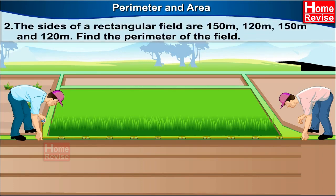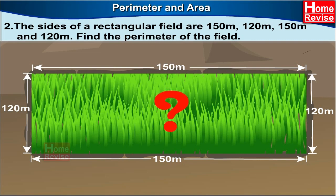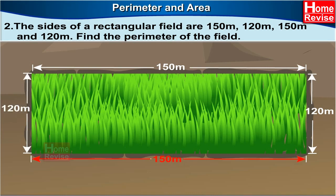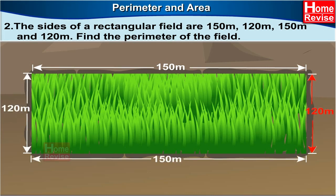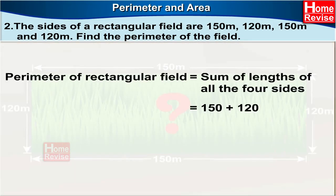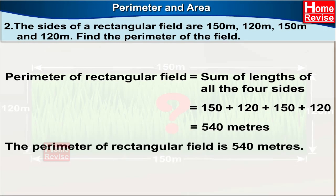Number two: The sides of a rectangular field are one hundred and fifty metres, one hundred and twenty metres, one hundred and fifty metres, and one hundred and twenty metres. Find the perimeter of the field. The perimeter of a rectangular field is the sum of all four sides. So it is one hundred and fifty plus one hundred and twenty plus one hundred and fifty plus one hundred and twenty, which is equal to five hundred and forty metres. Therefore, the perimeter of the rectangular field is five hundred and forty metres.